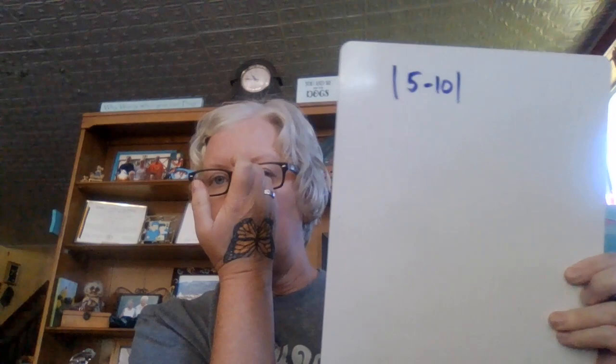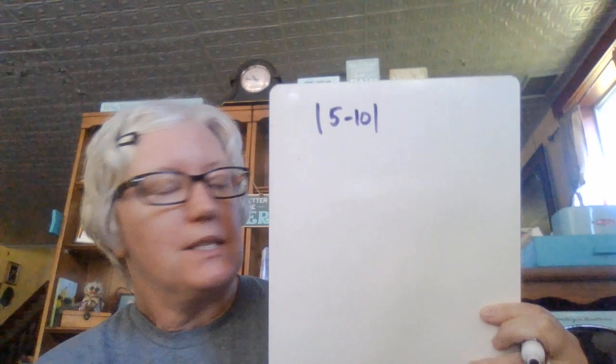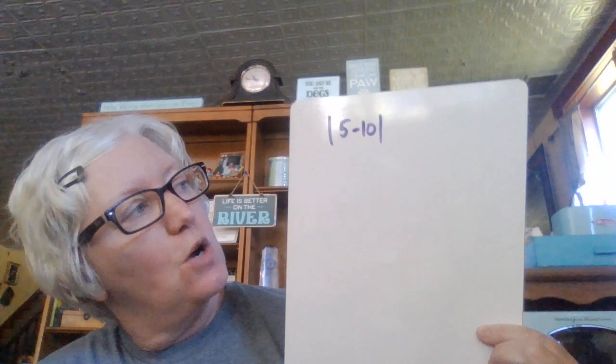What if I said what is the absolute value of five minus 10? Now we're going to be talking about the order of operations in another lesson here pretty soon, but the absolute value brackets are considered a grouping symbol, so we want to do stuff inside of there before we do anything else. So we're going to first do five minus 10, which is negative five. And then we're going to be taking the absolute value of negative five, which means how far from zero is negative five, and that answer is five units.